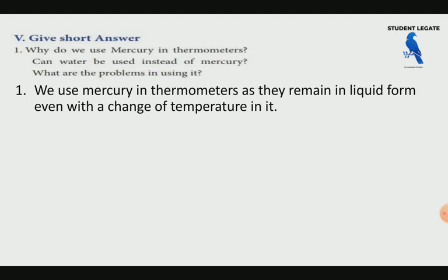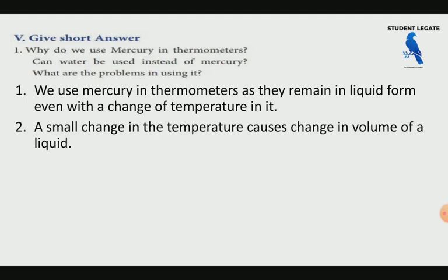A small change in temperature causes a noticeable change in the volume of the liquid. So if we want to detect temperature changes, we use mercury because it expands and contracts significantly.